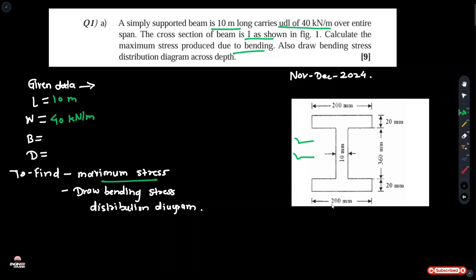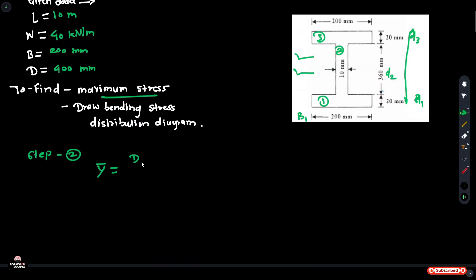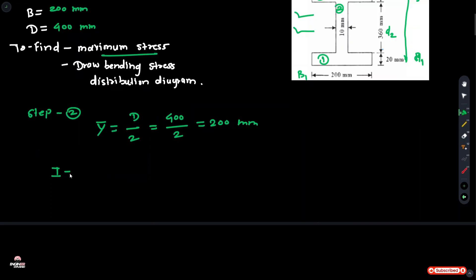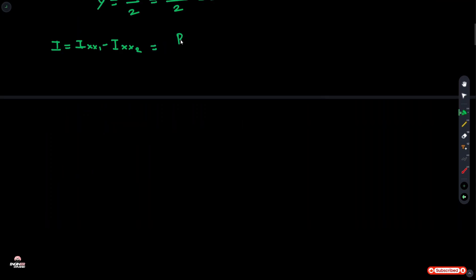B is 200 mm. D divided by 2 equals 400 upon 2 equals 200 mm, which is our y bar. I equals Ixx1 plus Ixx equals Bd³/12 minus Bd³/12.